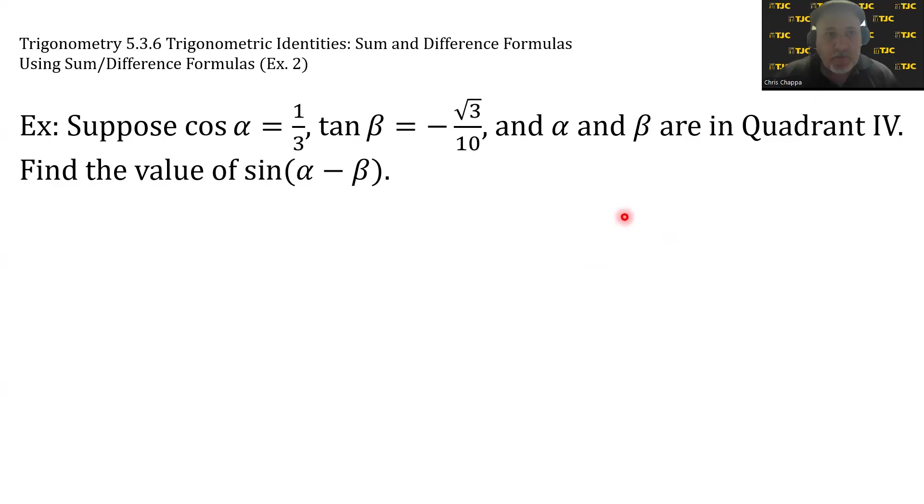Another type is like this. Suppose cos α = 1/3, tan β = -√3/10, and α and β are in quadrant 4. Find the value of sin(α - β).